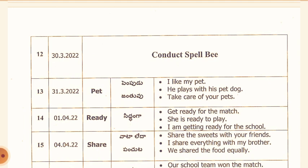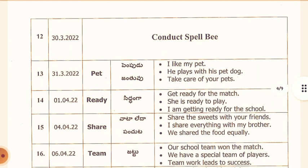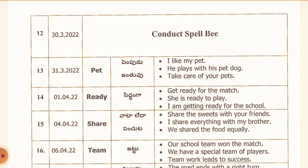On 30th March, we should conduct a Spell B test. 31st March: Pet. Telugu meaning: Pempuru Jantuvu. I like my pet. He plays with his pet dog. Take care of your pets. 1st April: Ready. Telugu meaning: Siddhanga. Get ready for the match. She is ready to play. I am getting ready for school. 4th April: Share. Share the sweets with your friends. I share everything with my brother. We shared the food equally.